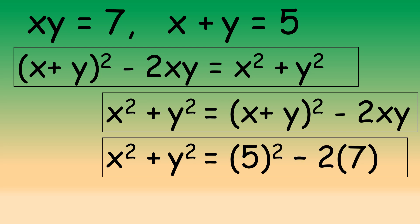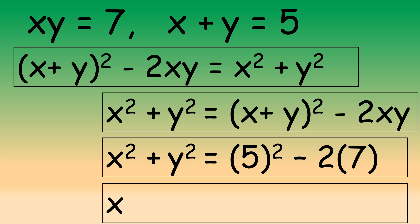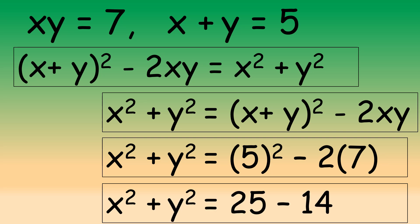So we have x squared plus y squared equals 5 squared minus 2 times 7. Five squared is 5 times 5, which is 25, and 2 times 7 is 14. So x squared plus y squared equals 25 minus 14, which gives us 11.